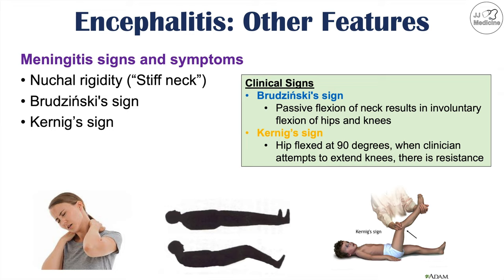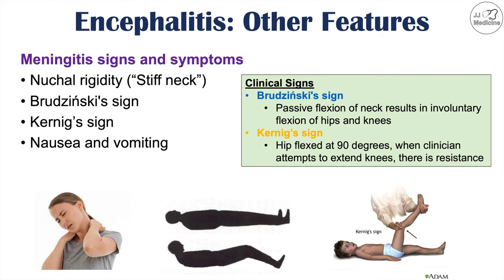With Brudzinski's sign, when the patient lies flat and the clinician passively flexes the neck, there is involuntary flexion of the hips and knees. With Kernig's sign, the clinician flexes the hip to 90 degrees, and when attempting to extend the knee, there is resistance. These signs indicate meningoencephalitis. Nausea, vomiting, photophobia, and phonophobia — sensitivity to light and sound — can also occur.